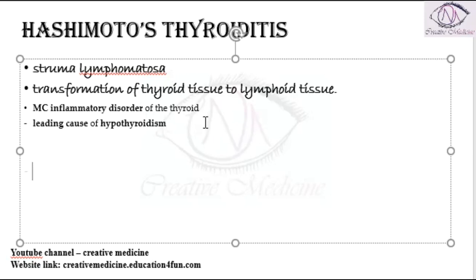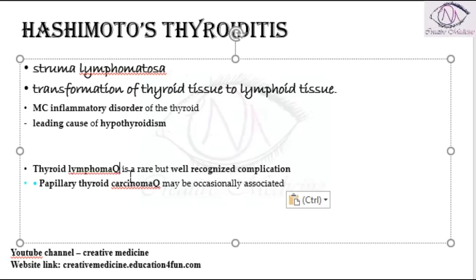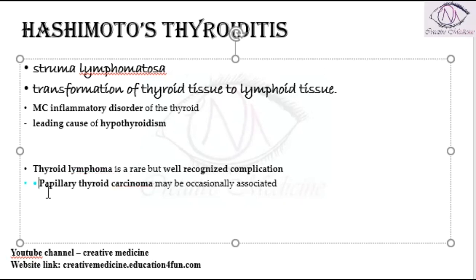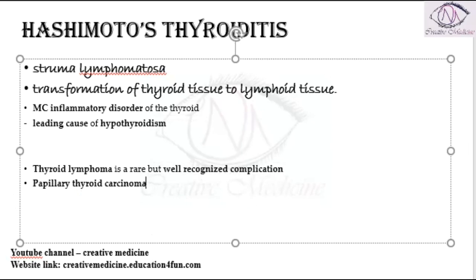Hashimoto's thyroiditis can predispose an individual to carcinomas. It can lead to thyroid lymphoma — though that is rare — and it may also predispose the patient to papillary thyroid carcinoma. So thyroid lymphoma and papillary thyroid carcinoma are both associated with Hashimoto's thyroiditis.